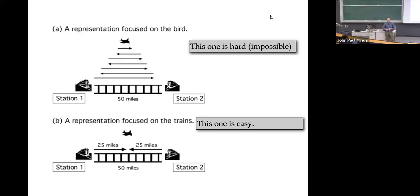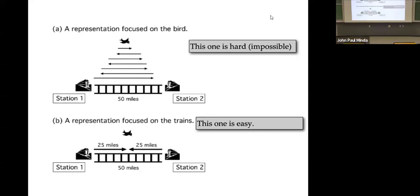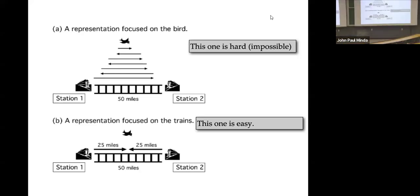This is a recurring theme across this course: when problems — or decisions, or logic puzzles — seem difficult, it's often because we've represented them in the wrong way. The frame or representation we choose can either help us or stand in the way of reaching our goal. Problem representation is central to problem solving difficulty.